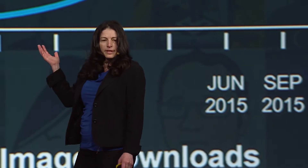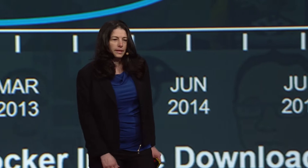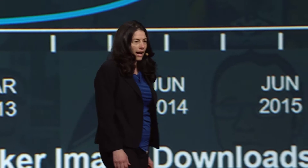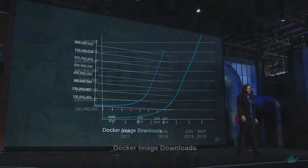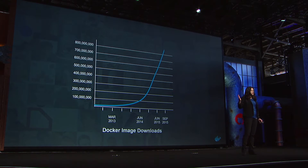I want to start with this. This is the graph of number of image downloads for Docker. It now stands at 800 million downloads. That's a really impressive number. It grew more than 18,000% just in the last year.